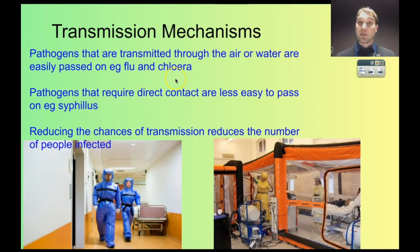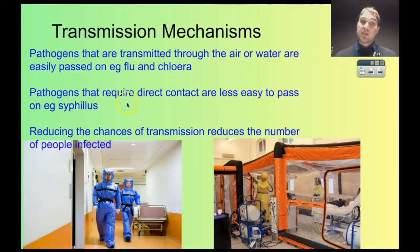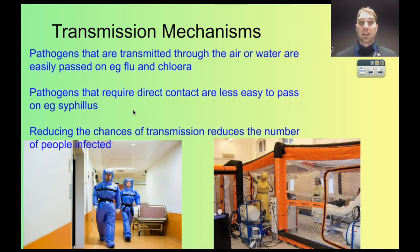Cholera passes through the water, so if the water is infected that can make its way around a large area very quickly. Pathogens that require direct contact are less easy to pass on because you need that direct contact between people, and generally people have less direct contact with others than they do just being in the same air. So if you reduce somebody's chance to transmit the disease, you can reduce the number of people who are infected.